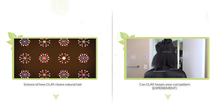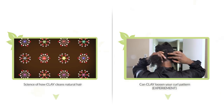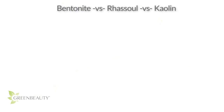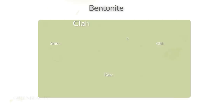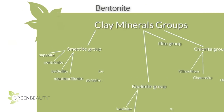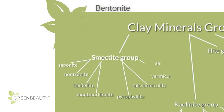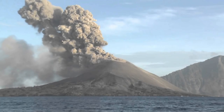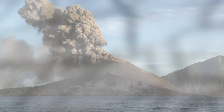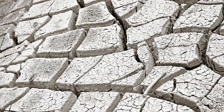You can find a link to both videos in the description section below. In this video I'm going to compare the physical and chemical differences between bentonite clay, rasul clay, and kaolin clay. Bentonite clay is part of the smectite group, consisting mostly of montmorillonite. It's made from volcanic ash that settled in ancient seas and transformed into clay minerals over time.